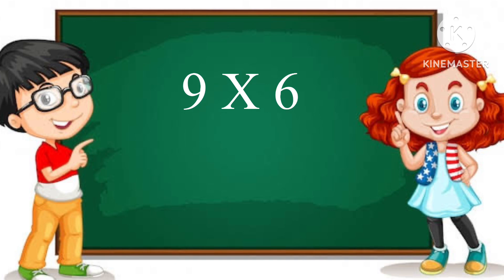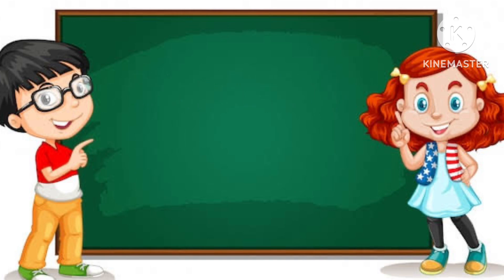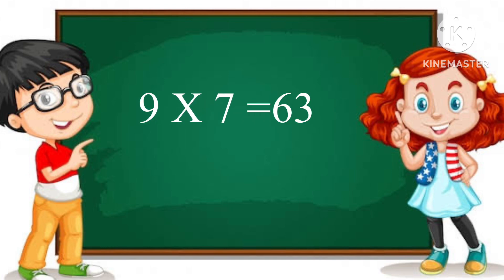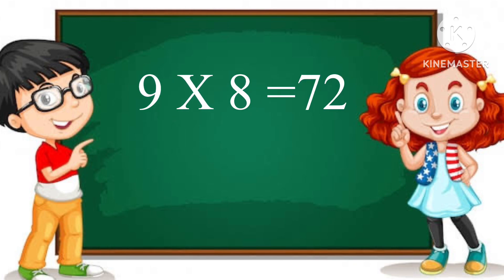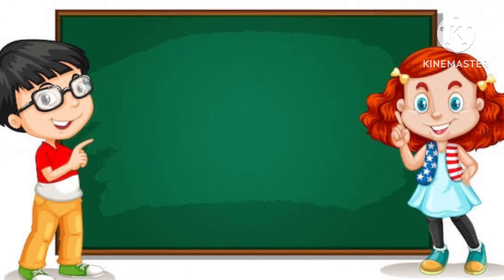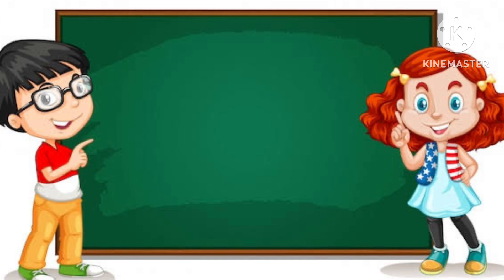Nine sixes are fifty-four. Nine sevens are sixty-three. Nine eights are seventy-two. Nine nines are eighty-one. Nine tens are ninety.